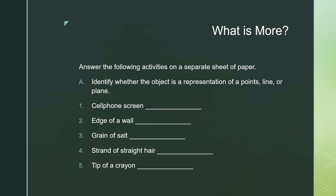For your first activity, answer the following on a separate sheet of paper or on the weekly home learning plan. For letter A, identify whether the object represents a point, line, or plane. The items are: number 1, cell phone screen; number 2, edge of a wall; number 3, grain of salt; number 4, strand of straight hair; and number 5, tip of a crayon.